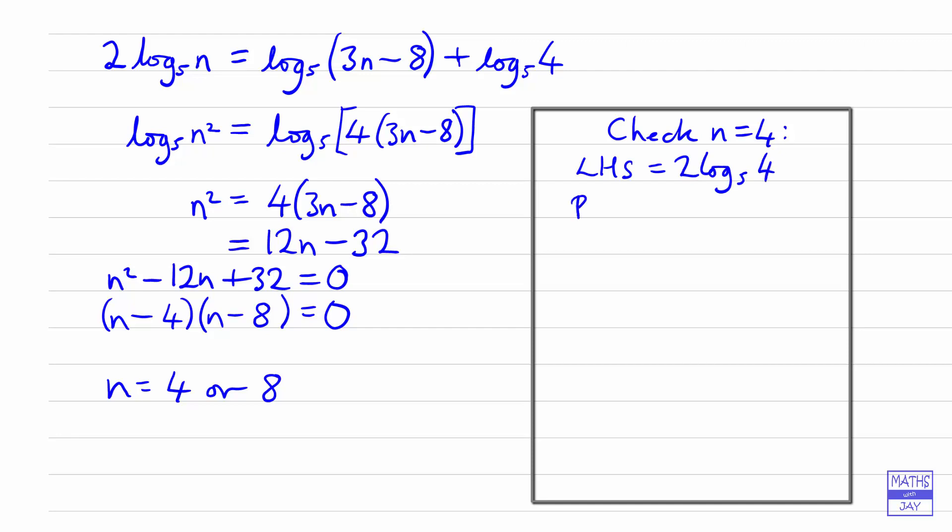And the right hand side, we will get log to base 5 of 3 times 4 minus 8. So 12 minus 8 is 4. And then the other term doesn't involve the n. So 2 lots of log to base 5 of 4 shows that the left hand side and right hand side are equal. So that's good.